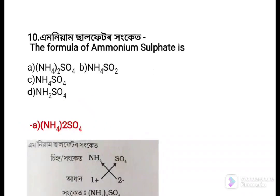Next question: The formula of ammonium sulfate is — Option a: (NH4)2SO4, Option b: NH4SO2, Option c: NH4SO4, Option d: NH2SO4. The answer is Option a: (NH4)2SO4, because the valency of NH4 is 1+ and SO4 is 2−, so the formula becomes (NH4)2SO4.